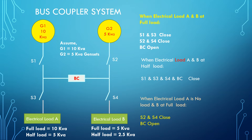Generator 1 has a 10 kV capacity and feeds electrical load A at 10 kV load capacity. Generator 1 runs the load. Switch S1 and S3 close for Generator 1. Generator 2 uses switches S2 and S4. When Generator 1 feeds both loads A and B, both go off-load when Generator 2 takes over.